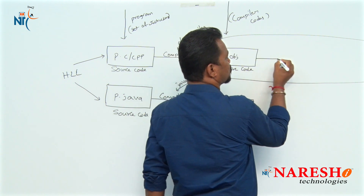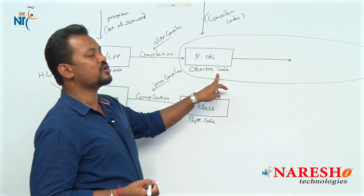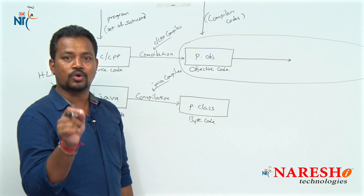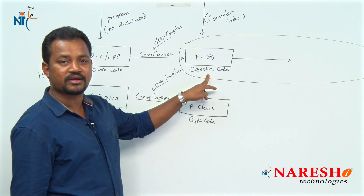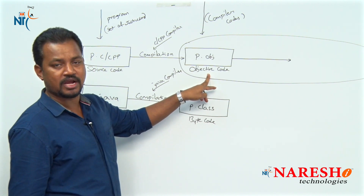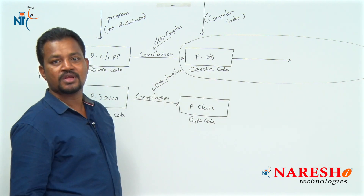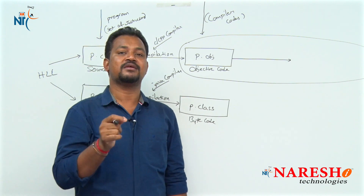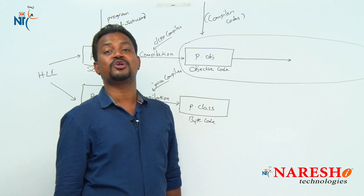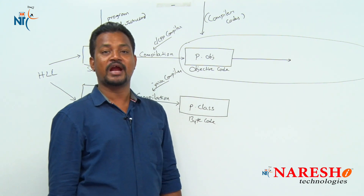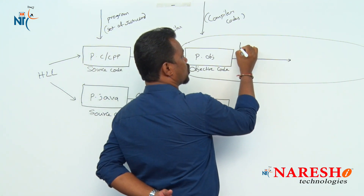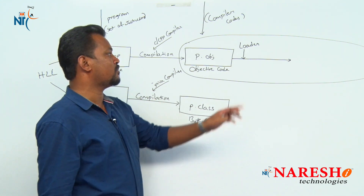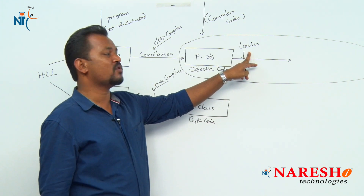In the execution process, linkers and loaders participate. In C or C++, we write #include stdio.h or #include iostream.h to include header files from the C or C++ libraries. Whenever we include such files, somebody has to load that library file into the current running program — the loaders take that responsibility. The loader takes the responsibility of loading the required files into the current running program from the C or C++ libraries.